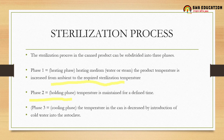Phase three is called the cooling phase. Here, the temperature in the can is decreased by introduction of cold water into the autoclave. So the process is: heat the product to sterilization temperature, hold it for a definite period of time, and then decrease the temperature by introducing cold water. The three phases are: the heating phase, the holding phase, and the cooling phase.